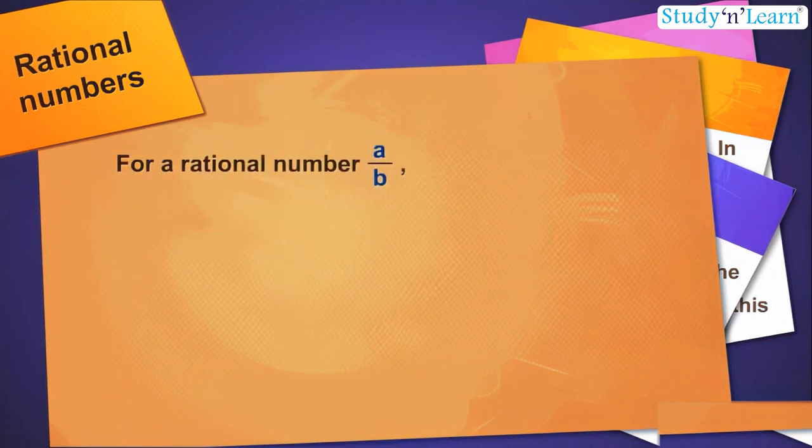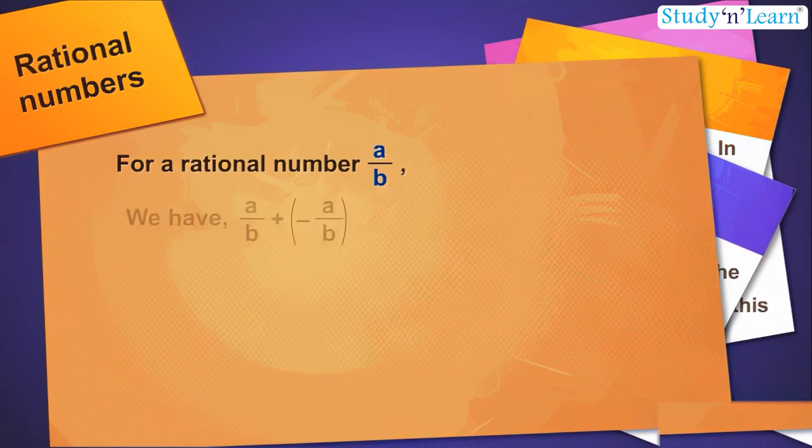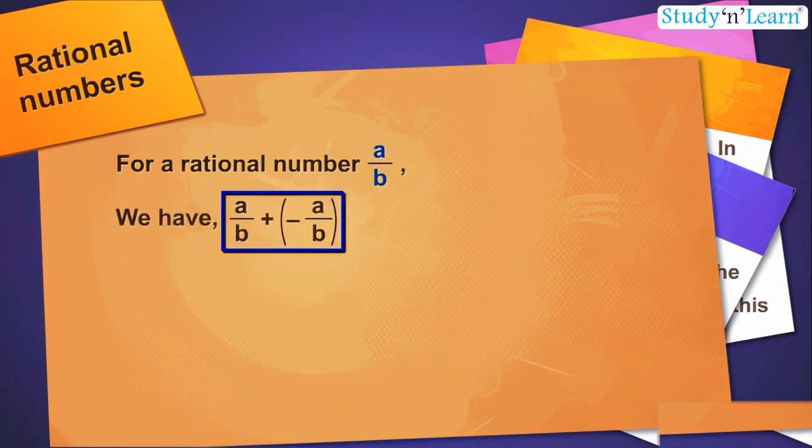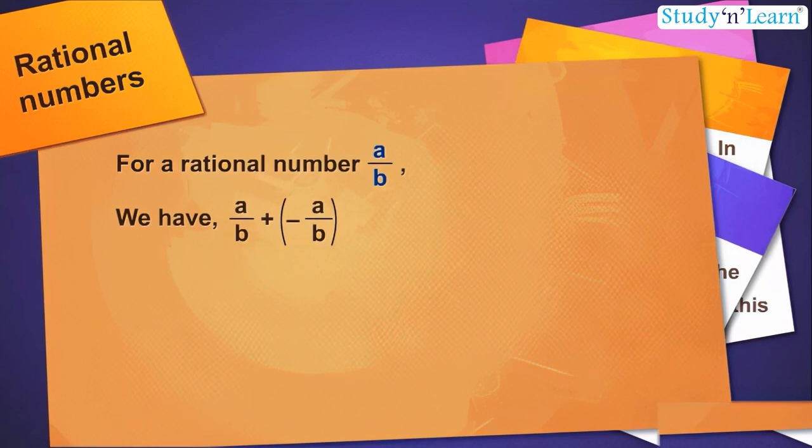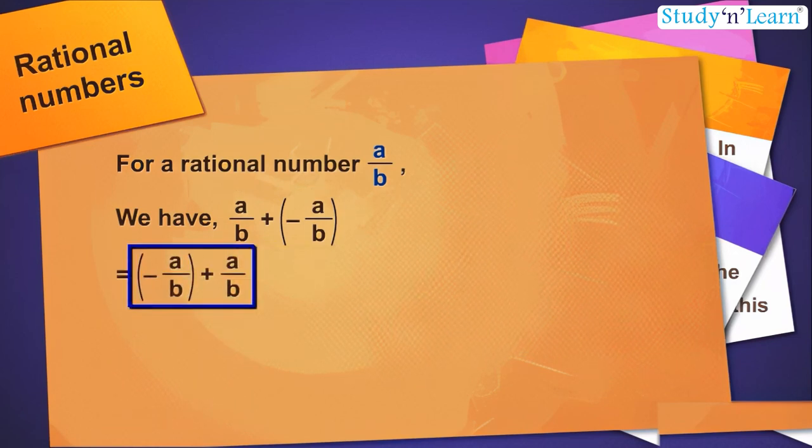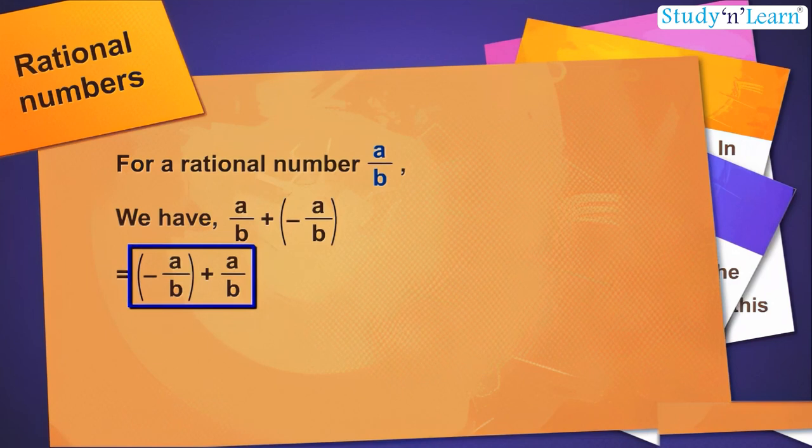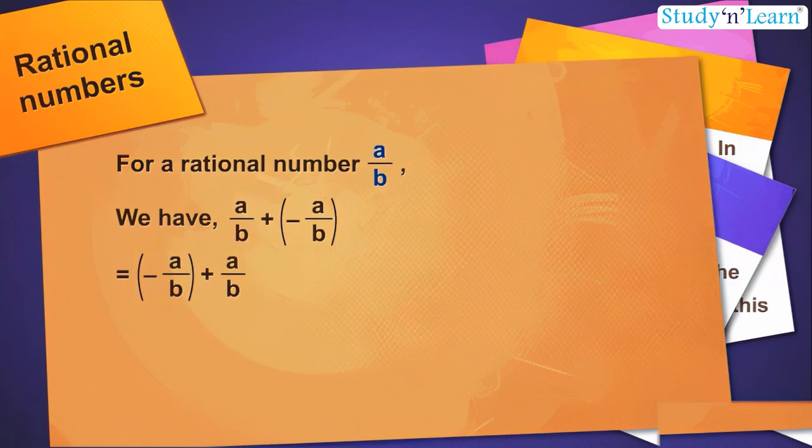In general, for a rational number a upon b, we have a by b plus minus a by b is equal to minus a by b plus a by b is equal to 0.